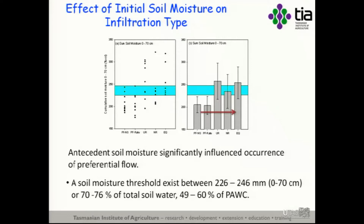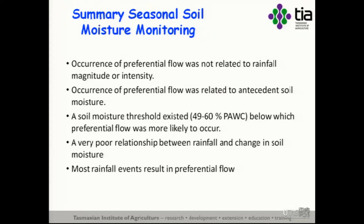Unfortunately the story is not as simple as that. A quick summary: preferential flow was not related to rainfall magnitude or intensity. Its occurrence fell below a soil moisture threshold. We have a very poor relationship between rainfall and change in soil moisture — which also invalidates the use of most soil water models. And most rainfall events resulted in preferential flow. Preferential flow is the dominant and most common form of infiltration into these soils.